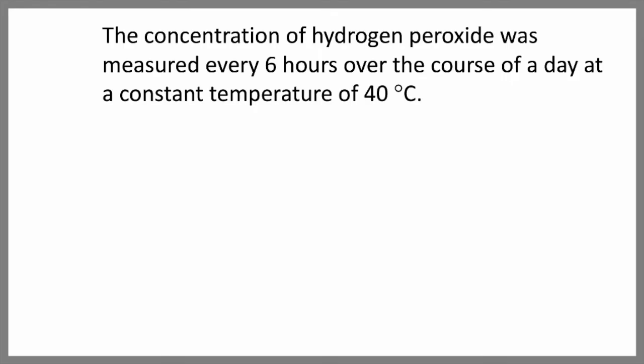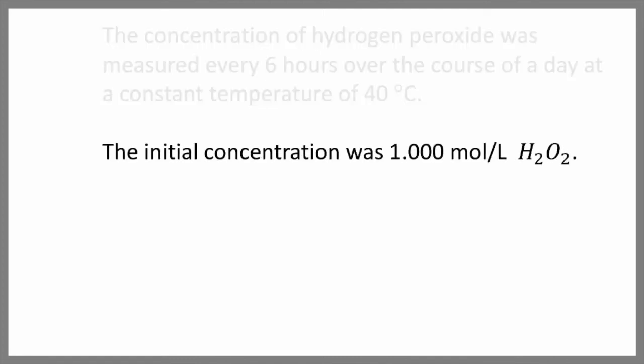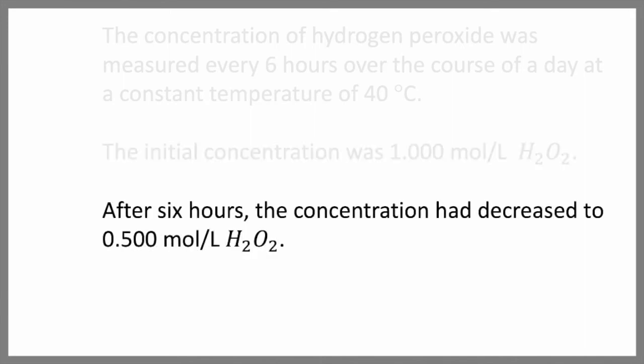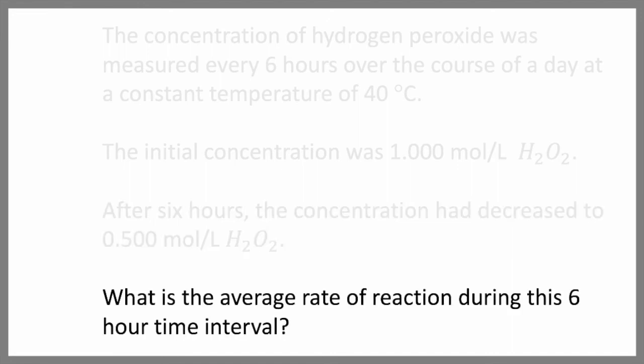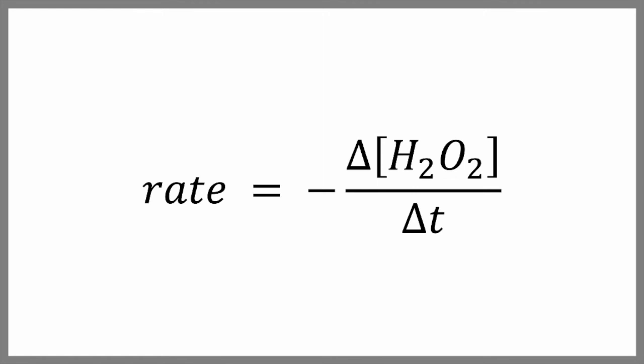Let's look at the following example. The concentration of hydrogen peroxide was measured every six hours over the course of a day at a constant temperature of 40 degrees Celsius. The initial concentration was 1.000 moles per liter. After six hours, the concentration had decreased to 0.500 moles per liter. What's the average rate of reaction during the six-hour time interval? Well, we make our rate equation, and notice that we have a minus sign, and this is because hydrogen peroxide is disappearing.